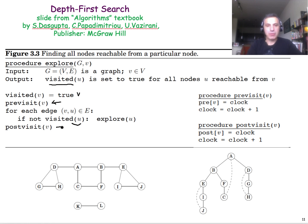The functions that you see here, pre-visit and post-visit, they're not necessary. I just include them so that we get some additional information about the order in which this algorithm visits nodes.